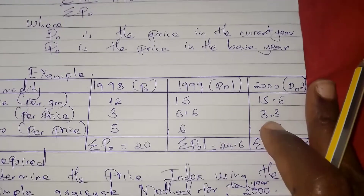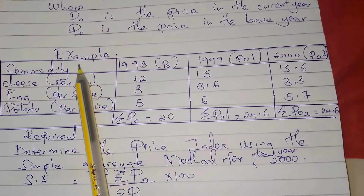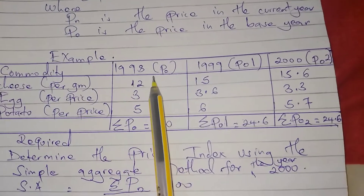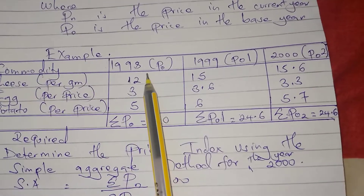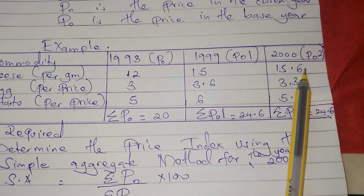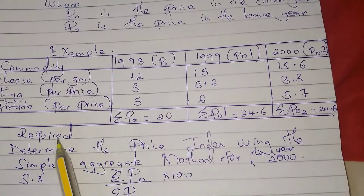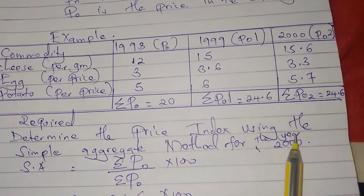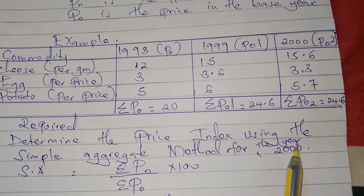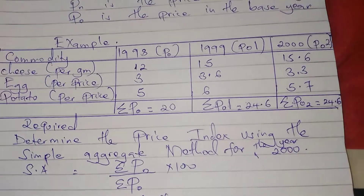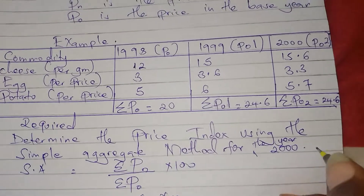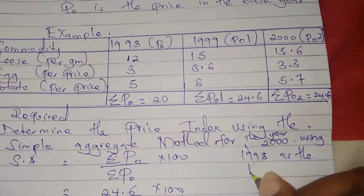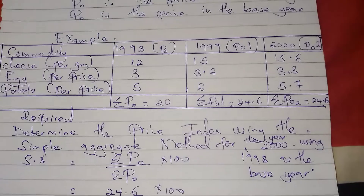Let's have an example on the simple aggregate method. In this example, they have given us commodities: cheese, eggs, and potatoes. They have given us the prices for the commodities in 1998, 1999, and 2000. They have not given us weights. They want us to determine the price index using the simple aggregate method for the year 2000, using 1998 as the base year.